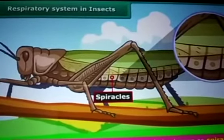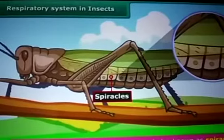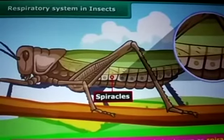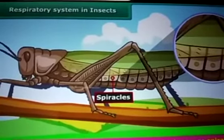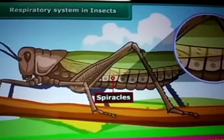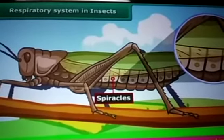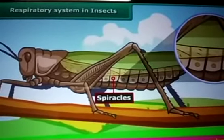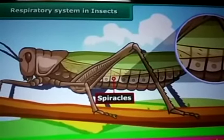Animals such as elephants, lions, cows, goat, frog, lizard, snake, and birds have lungs in their chest cavity like human beings. Now how do the other organisms breathe?